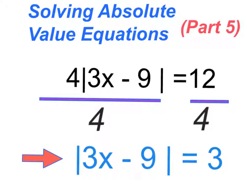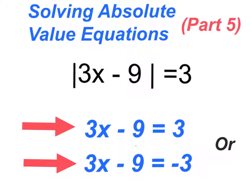Now from this step here, this is where we're going to set up our two equations. We equate, drop the absolute value symbols, write down three X minus nine is equal to three. But remember our second equation, we write down the exact same thing, except we change the sign on the right hand side of our term. So three becomes that negative three.